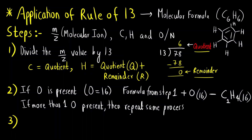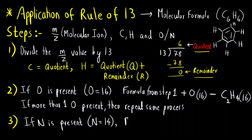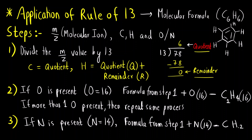The same goes for if the hetero atom present is nitrogen. If nitrogen is present, its atomic mass is 14. You will take the formula from step 1 containing only carbon and hydrogen, add one nitrogen (atomic mass 14), and subtract CH2 — since 12 + 2×1 = 14. So you subtract 1 carbon and 2 hydrogens.